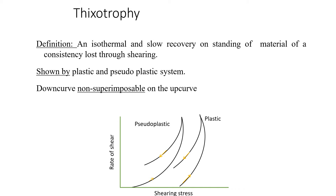If the rate of shear is reduced once the desired maximum has been reached, the down curve will be identical with the up curve only if it is a Newtonian system. In the case of shear thinning systems, or pseudo plastic ones, the down curve is frequently displaced to the left of the up curve, as you can see in this curve. This shows that the material has lower consistency at any one rate of shear on the down curve than it had on the up curve, indicating a breakdown of structure and hence shear thinning.